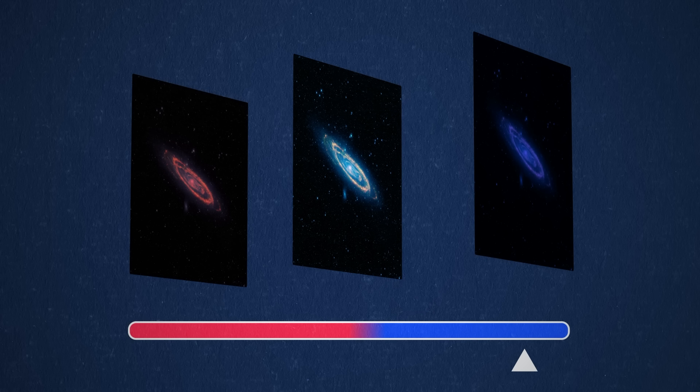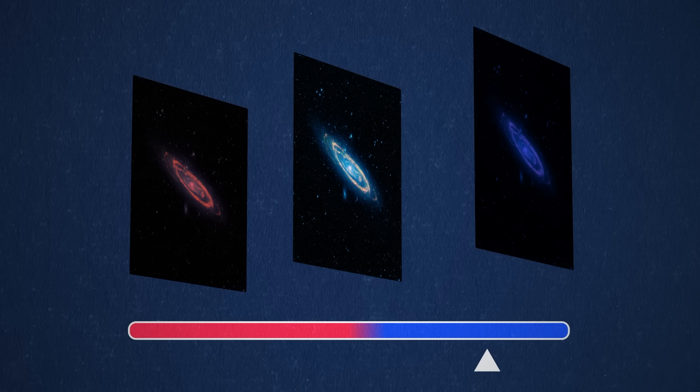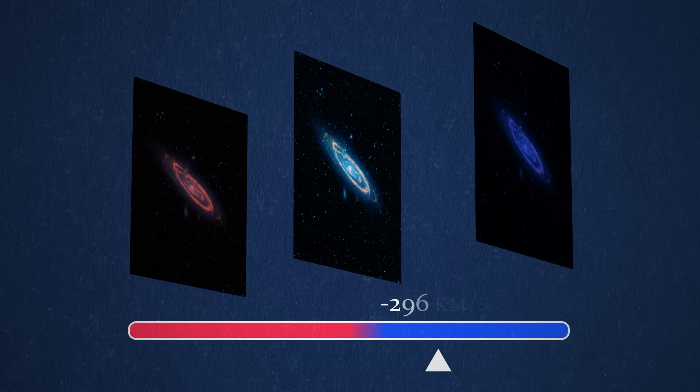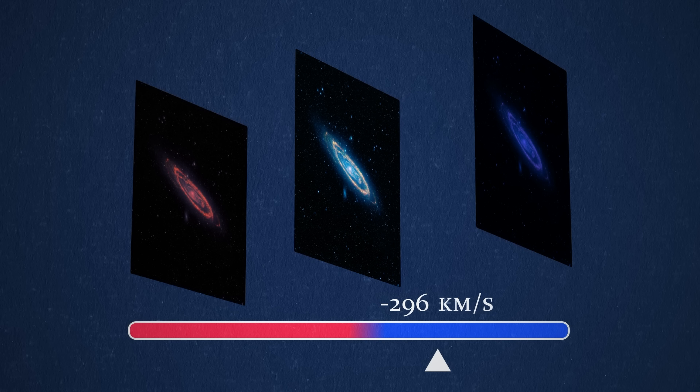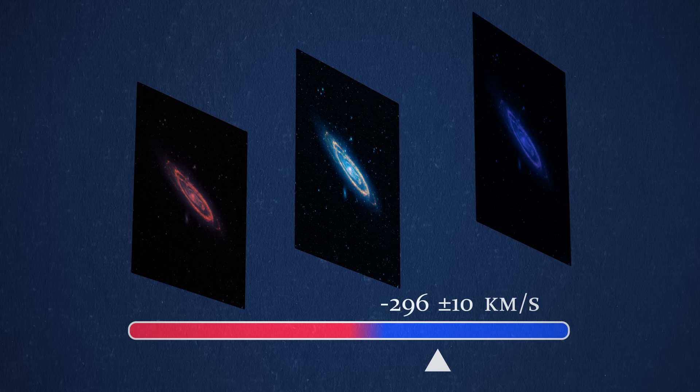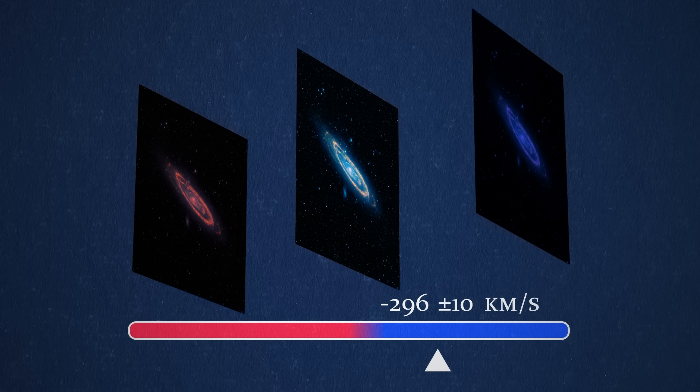And it was via this method, that van der Hulst arrived at an average speed of minus 296 km per second, with an uncertainty of around 10 km. A clear indication that Andromeda is moving towards us.